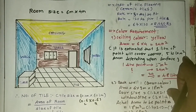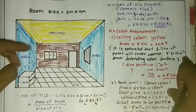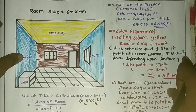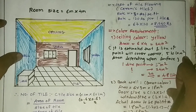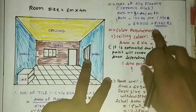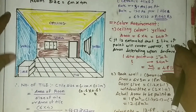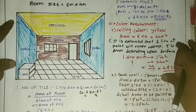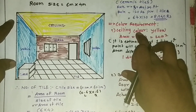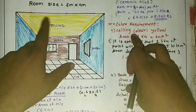So the cost of tiles for a room of size 6 by 4 meters is around 8,000 rupees. You can calculate as per your own room size and the quality or type of tile you are using. Now we move on to the calculation of paint requirement.